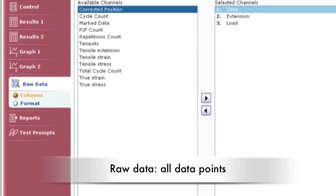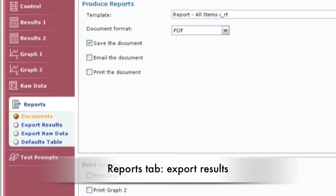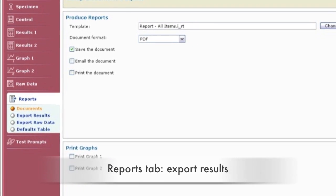The raw data tab displays all data points of the runs or tests. The report tab allows you to print or export the results to a PDF or Word document.